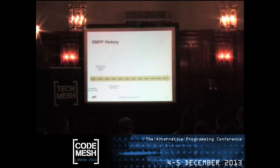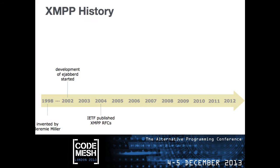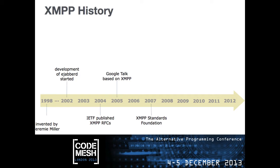XMPP started over 10 years ago. Initially it was Jabber, invented by Jeremy Miller, and then it got standardized. Some first projects started to be implemented, including eJabberd, which started over 10 years ago. Once standardized, big players started to adopt it — in 2005, Google Talk was released, based on XMPP, and Google also proposed some extensions to XMPP. There is nowadays an XMPP Standards Foundation which meets twice a year to discuss additional extensions to the protocol.